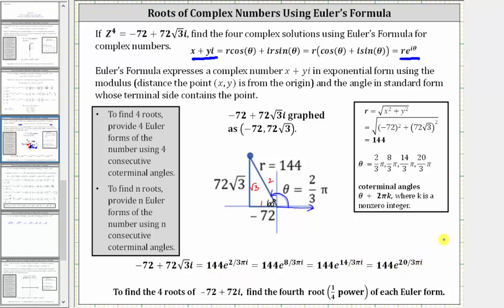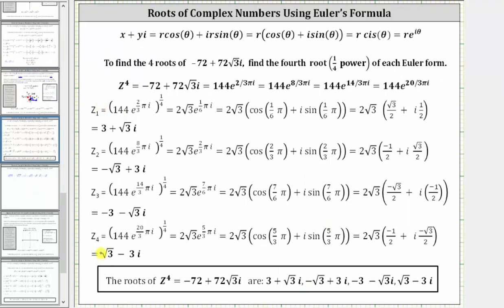To find the four complex solutions or four roots, we need to find the fourth root — or one-fourth power — of each of these Euler forms or exponential forms. The roots will be z sub one through z sub four, and for each root we have taken the exponential form of the complex number and raised it to the one-fourth power.